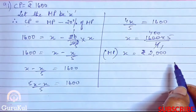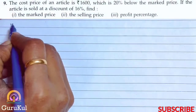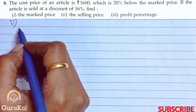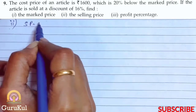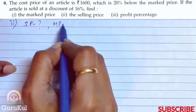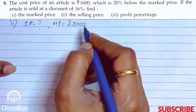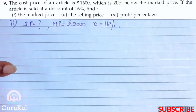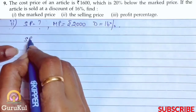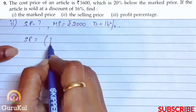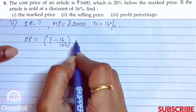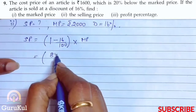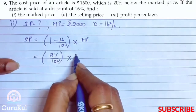So we have solved the first part of question number 9. Now for the second part, the article is sold at a discount of 16%. The mark price we found is rupees 2000. SP formula is: SP equals (1 minus 16/100) into MP. After subtraction and taking LCM we get 84/100 into 2000.